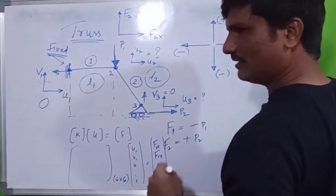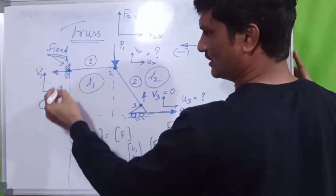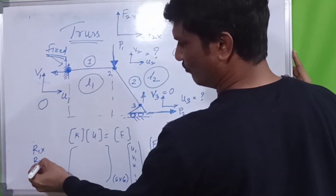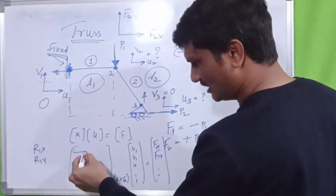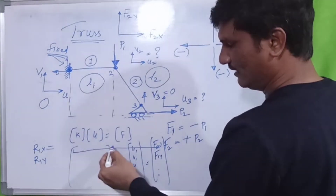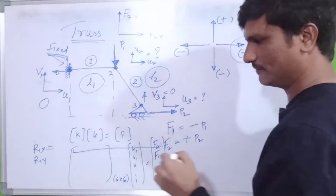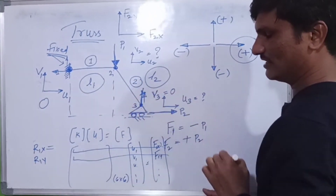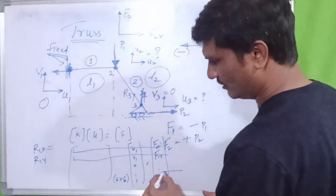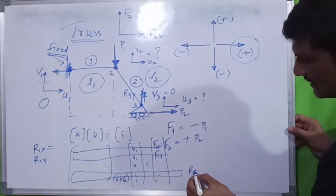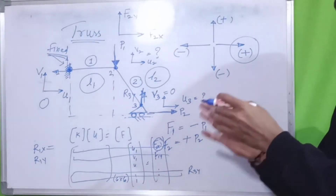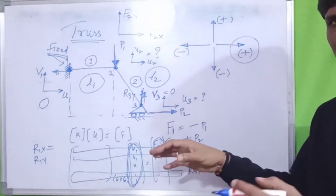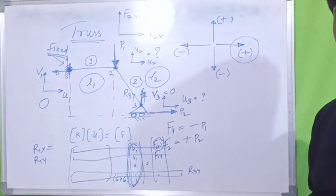To calculate the reaction forces: at node one it is a rigid fix, so there will be a horizontal reaction force R1X and a vertical reaction force R1Y. You take the first equation to calculate R1X from K·U = R1, then the second equation for R1Y. At node three there is a roller, so there will be a vertical reaction force R3Y. Take the corresponding equation and substitute the displacements you calculated; after the matrix multiplication you will get the reaction forces directly.